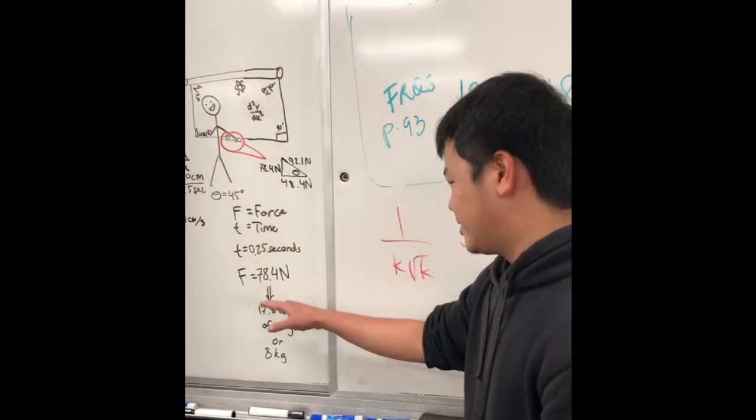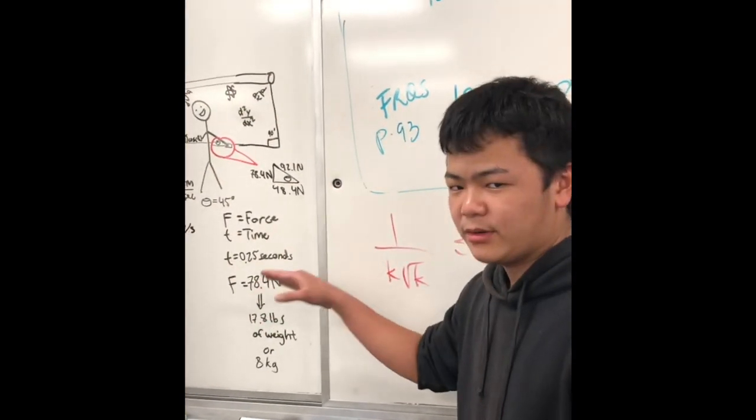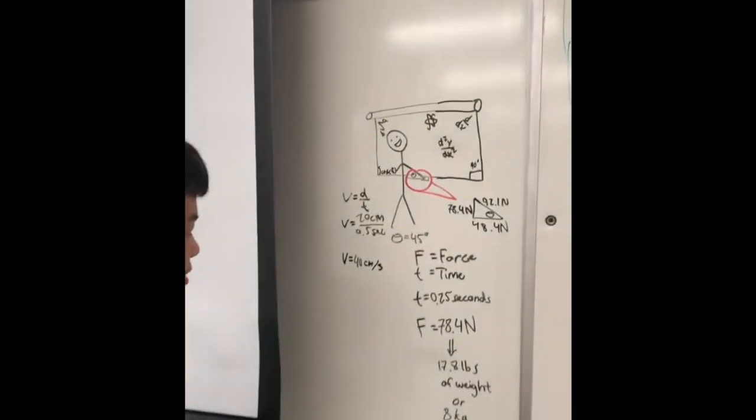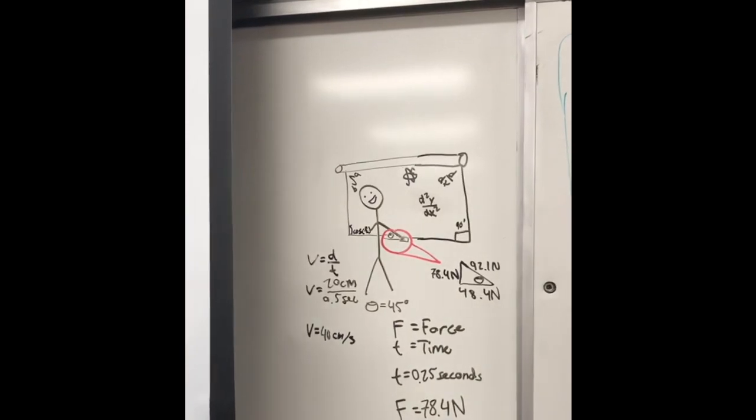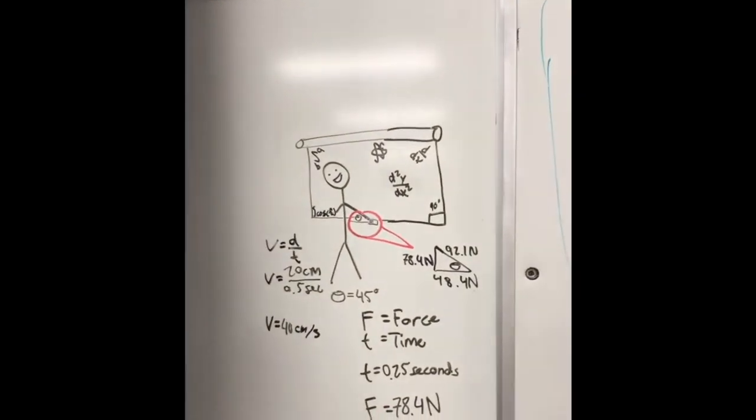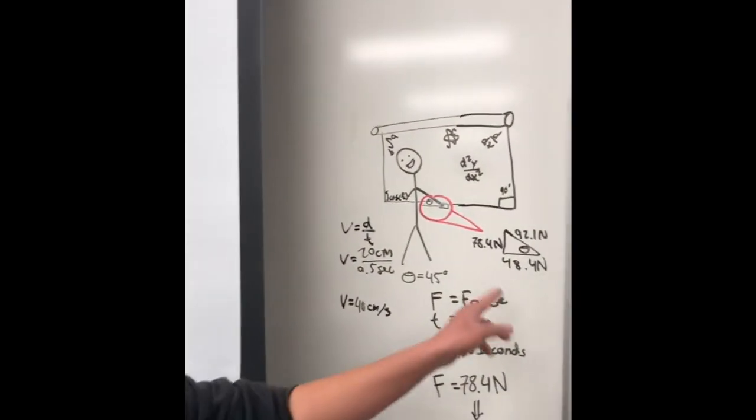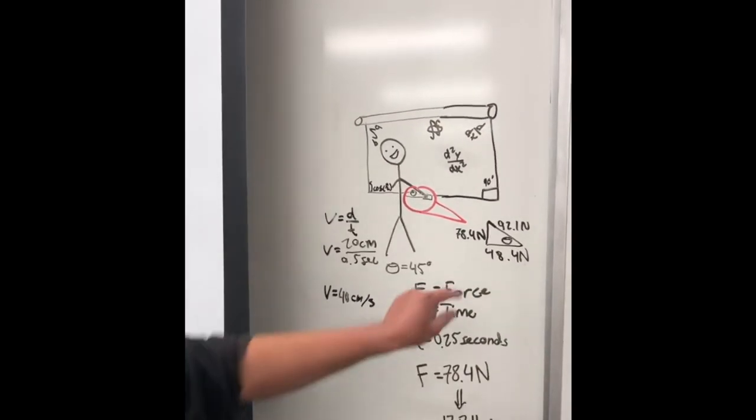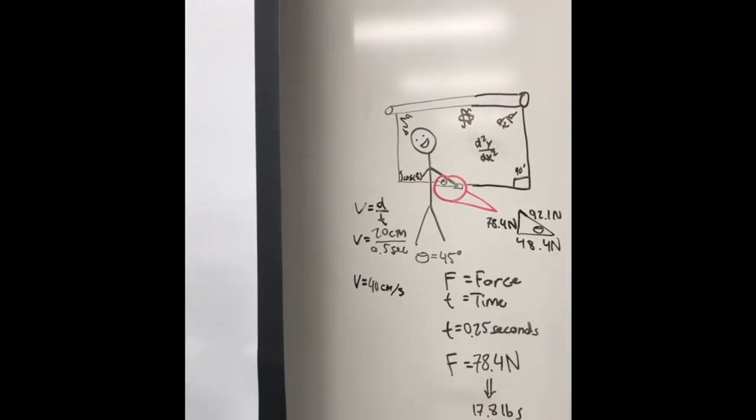Now, for the force, you want a force of 78.4 newtons. Now, as shown here in this little diagram, using trigonometry, we can also see that the hypotenuse of the force would be 92.1 newtons, and that the other unit would be 48.4 newtons. So this right here is the force you're pushing down with your wrist.